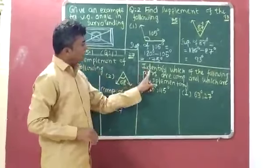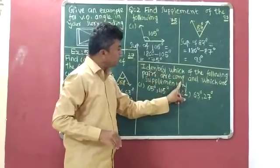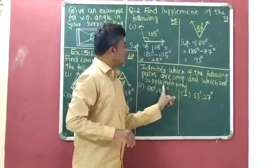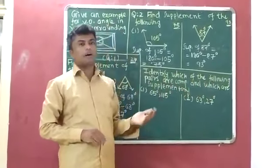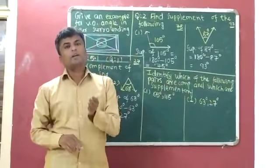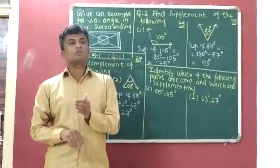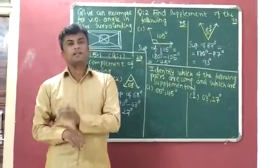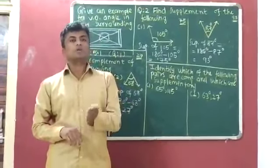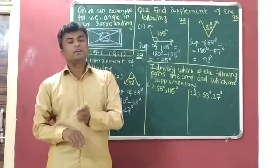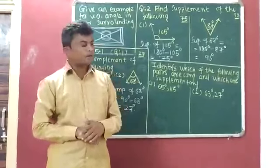Question number 3: identify which of the following pairs are complementary and which are supplementary. Here pairs are given and we have to identify which pair is supplementary and which pair is complementary. If the sum of measures of a pair is 90 degrees, then the given pair is complementary. And if the sum of measures of a given pair is 180 degrees, then the pair is supplementary.